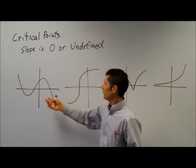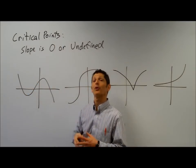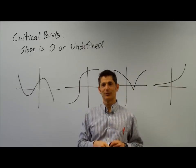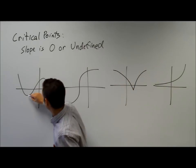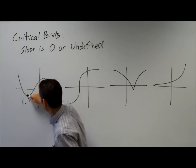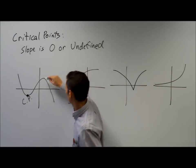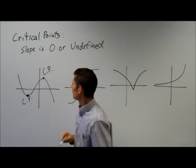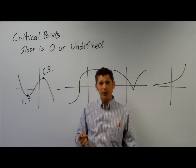So on this first function right here, how many critical points do I have? Two. I have two critical points. There's a critical point — I'll say CP for critical point. Both places where the slope is zero.